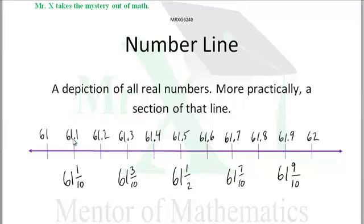61 and 1 tenth is the same as 61.1. 61 and 3 tenths is the same as 61.3. And of course 61 and 5 tenths is 61 and 1 half because 0.5, 5 tenths is the same as a half. 61 and 7 tenths, 61 and 9 tenths. So we have these 1 tenth marks between the whole number 61 and the whole number 62.